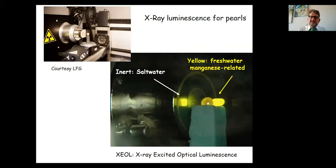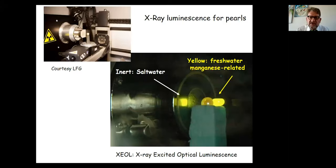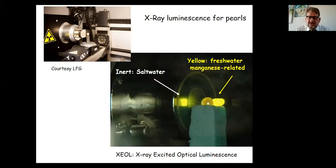Another type of luminescence used in gemology is X-ray excited luminescence in pearls. Freshwater pearls luminesce yellow under X-ray — related to manganese, per recent studies by Scarampelas and colleagues at Danat — while saltwater pearls remain inert. This allows identification of freshwater versus saltwater pearls, though it requires specialized X-ray equipment, not something you can do at home.